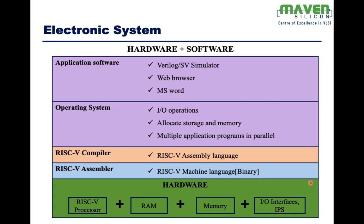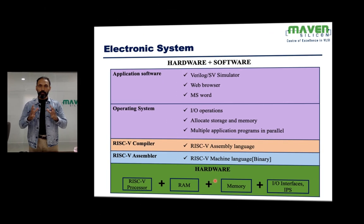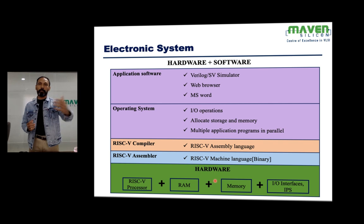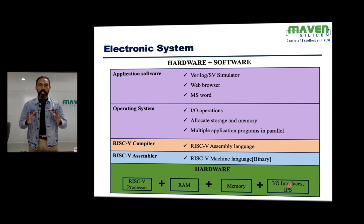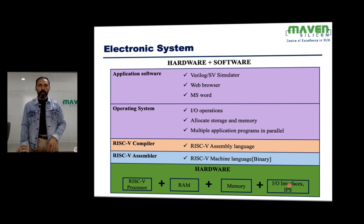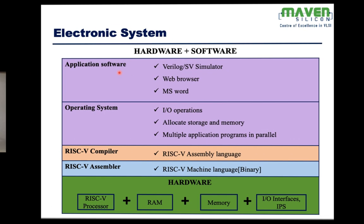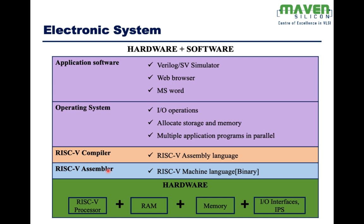The electronic system is composed of hardware and software. The hardware is built using a system on chip, which contains almost all components needed — IPs like the processor, RAM, storage memory, and IPs for interfaces and different hardware blocks. Using the system on chip, we create the hardware system, which is the PCB. On the software side, there are different layers: application software, operating system, compiler, and assembler.